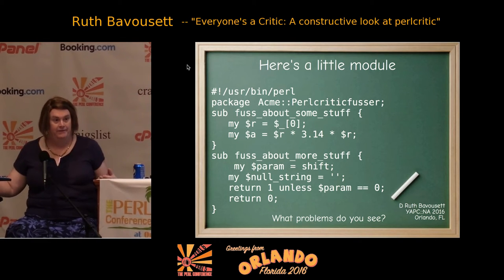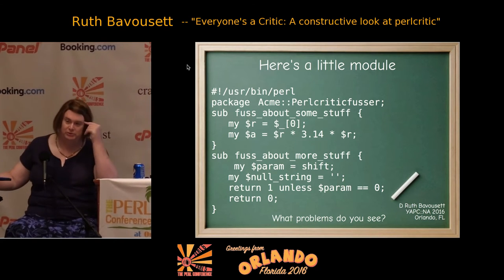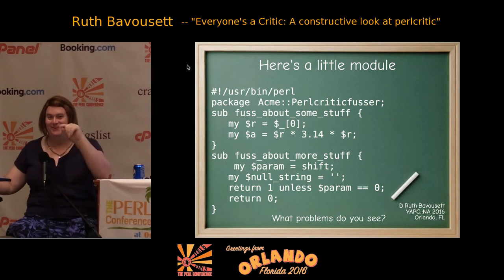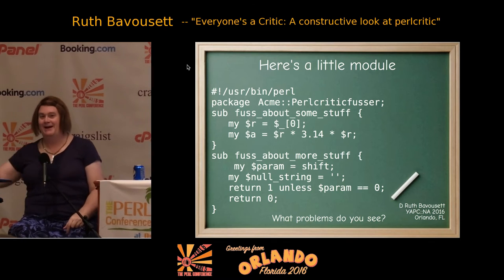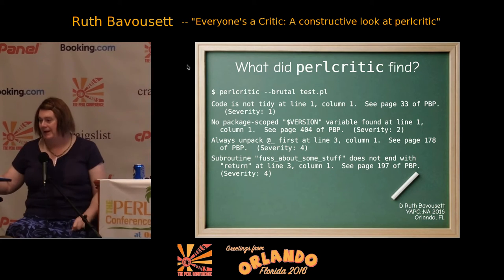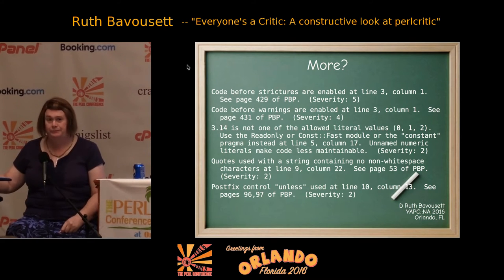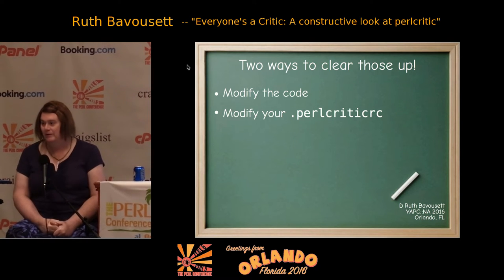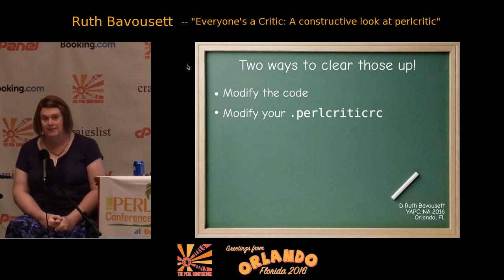A postfix if can mislead someone about program flow — they're going to go ahead and do the thing and then think 'oh shoot, I wasn't supposed to do that.' You walk through a whole subroutine, get back, and go 'crap, I didn't need to do that.' So how do you fix these things? You edit your code — don't do that — or you can modify your ProCritic RC so that ProCritic doesn't care about those things anymore.